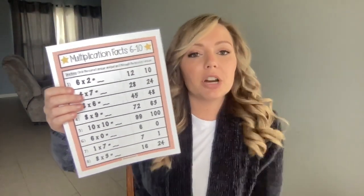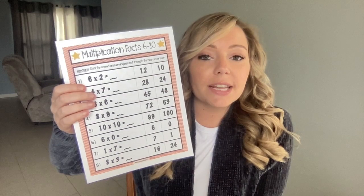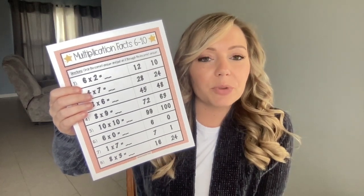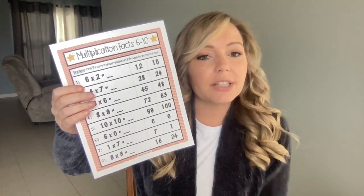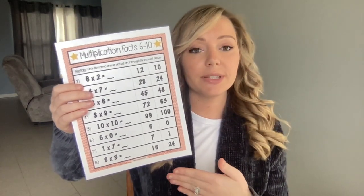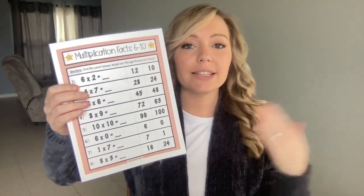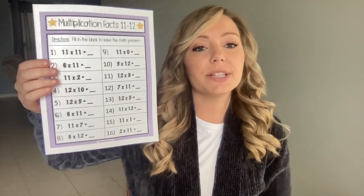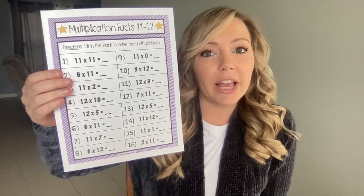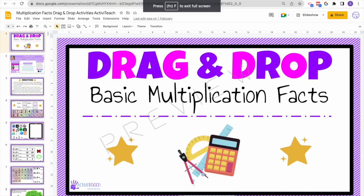Here is a multiple choice worksheet where students will choose the correct answer — for example, six times two equals twelve, so students will circle twelve. The fun part about these worksheets is that at the end, when you print them off, there are some blank worksheets where students can create correct and incorrect math problems for other students in their class. The last worksheet I have is a fill-in-the-blank worksheet.